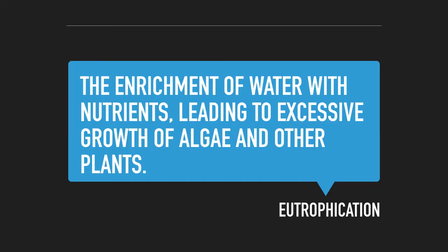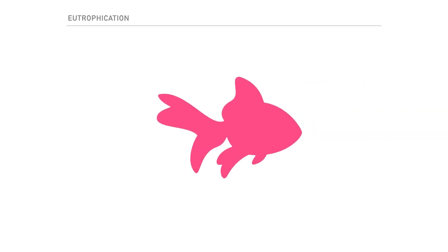Eutrophication is the enrichment of water with nutrients, leading to excessive growth of algae and other plants. It is caused by plant nutrients — nitrates and phosphates — entering the water by means of slurry and fertilizers. Plants and algae absorb these nutrients, and algae in particular grows rapidly causing algae bloom. The algae bloom dies, which causes microorganisms to grow and multiply as they feed on the decaying bloom. The microorganisms respire and use up all the oxygen, depriving fish of oxygen.